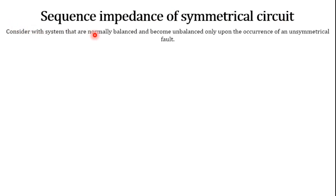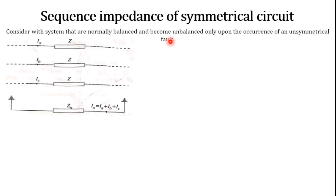Let us consider a system that is normally balanced initially, and it becomes unbalanced only upon the occurrence of an unsymmetrical fault. Consider a three-phase system with currents Ia, Ib, and Ic in phases A, B, C, with a return path through the neutral having impedance Zn. The impedance of phases A, B, and C is the same — that is Z — for the entire network. The neutral current In equals Ia plus Ib plus Ic, meaning when the system is unbalanced, current flows in the neutral.